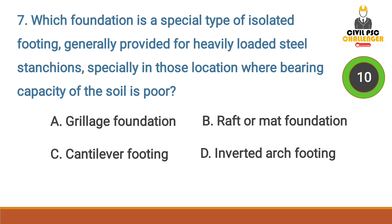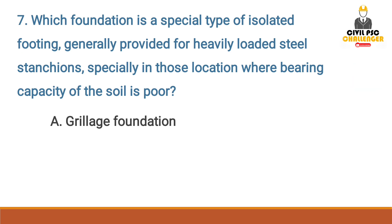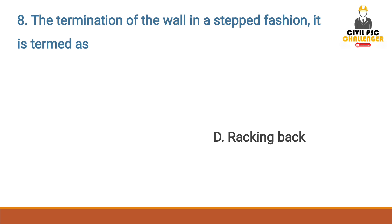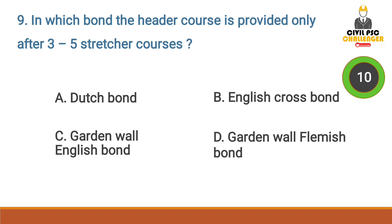Heavily loaded steel columns, especially in locations where bearing capacity of the soil is poor — answer option A: grillage foundation. Next question: the termination of the wall in a stepped fashion is termed as — answer option D: racking back. Next question: in which bond is the header course provided only after three to five stretcher courses?